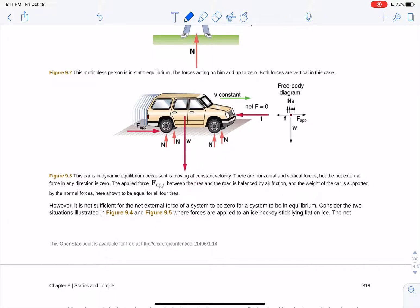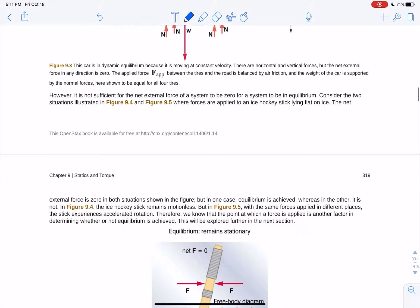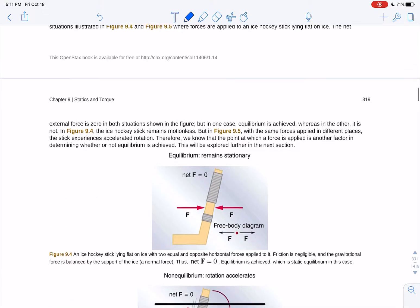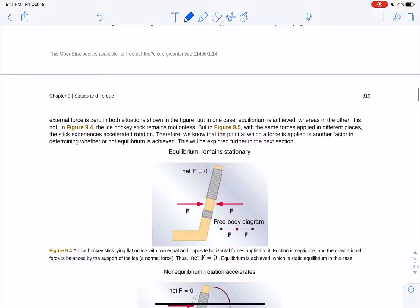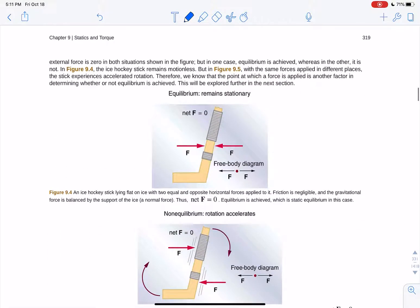There's something called dynamic equilibrium and that's where this car could be moving at constant velocity, but if it's at constant velocity it has no net force. So it's moving, it's dynamic, but it's not changing its velocity so it's called dynamic equilibrium.